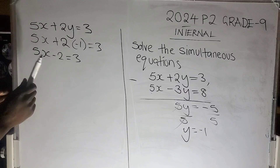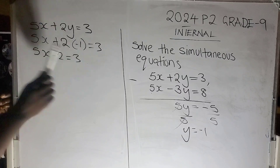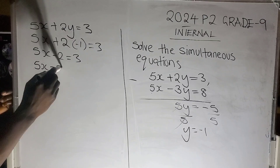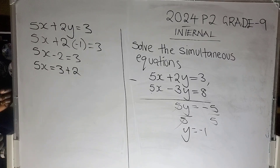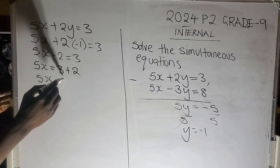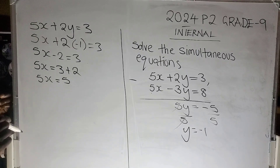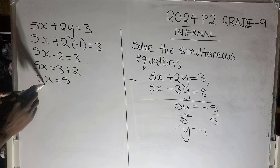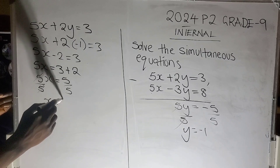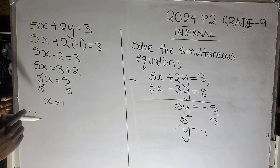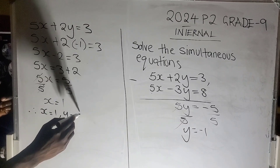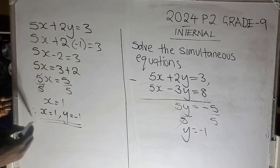So 5x plus 2 times negative 1 equals 3. That gives us 5x minus 2 equals 3. We collect like terms — the negative 2 becomes positive 2 on the other side. So 5x equals 3 plus 2, which is 5. Divide both sides by 5, and x equals 1. Therefore x equals 1 and y equals negative 1.